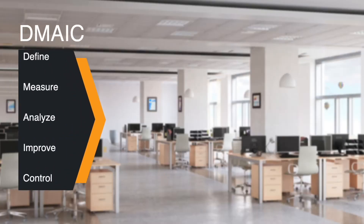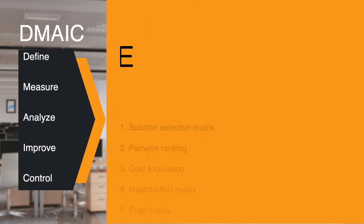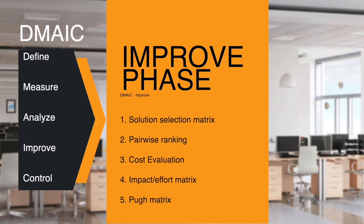The 4th phase of DMAIC is Improve. In this phase of the project, you will select and implement solutions to the problems that you identified. Chances are that a problem has many solutions and that your team identified many of them. In making decisions and pursuing one solution, there are multiple tools that you can use.